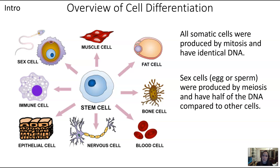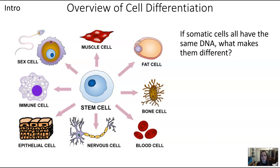Gametes — those sex cells — are different. These are produced by meiosis and they have only half of the DNA compared to other cells. So a follow-up question: if all of these somatic cells have the same DNA, how is it possible that the cells are different from one another? If all of them have the same instructions, how do they end up so different?